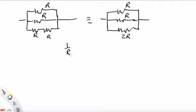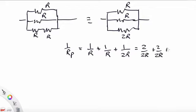So the equivalent resistance of that parallel circuit will be 1 over Rp equals 1 over R plus 1 over R plus 1 over 2R. Putting them all over the same denominator we have 2 over 2R plus another 2 over 2R plus 1 over 2R which is 5 over 2R.